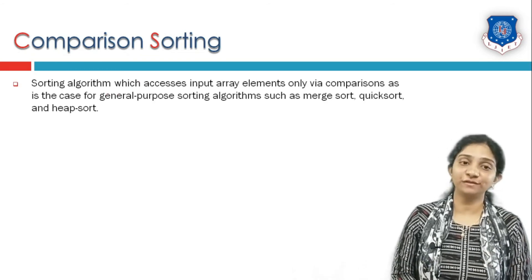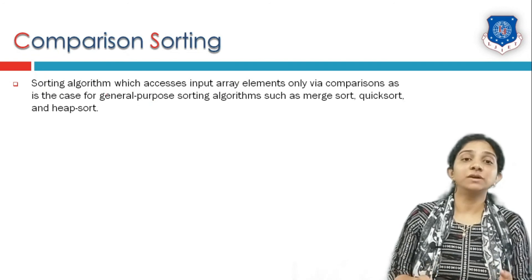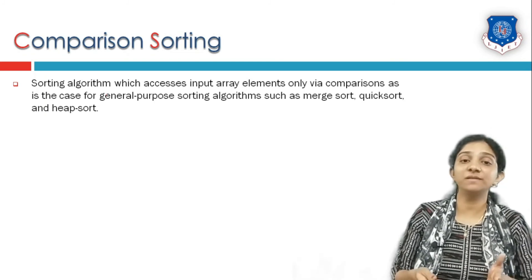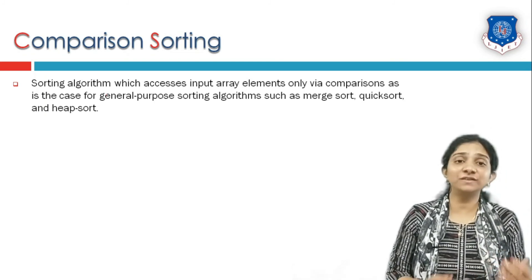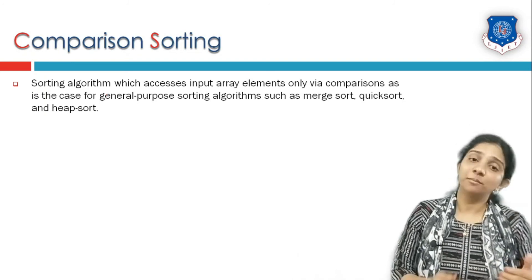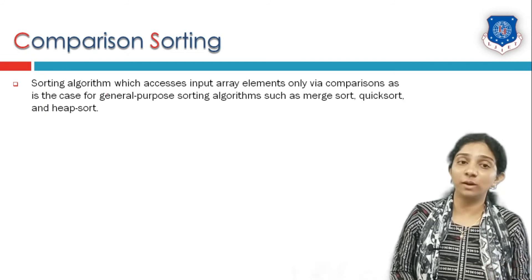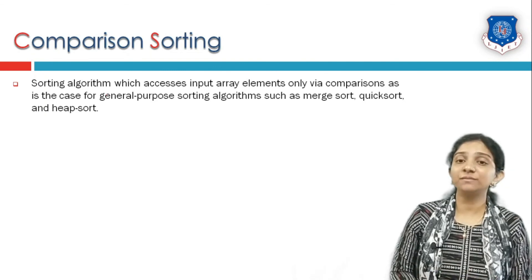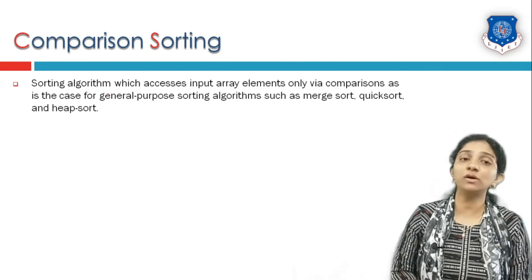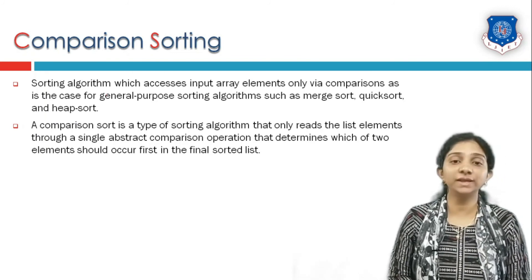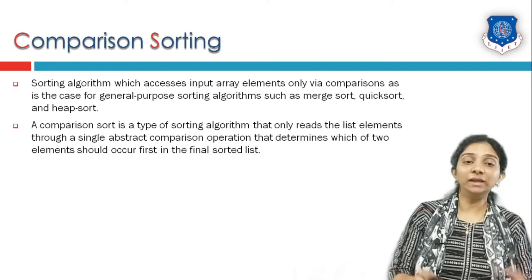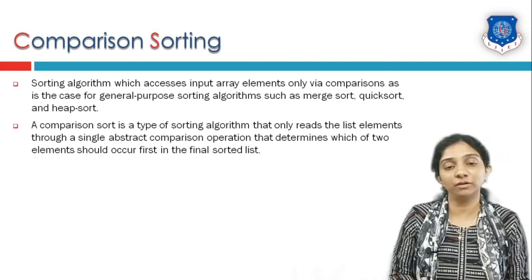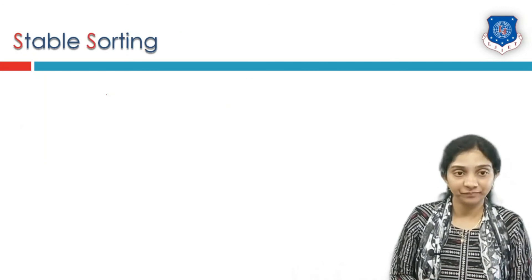The second definition is comparison sort. A sorting algorithm that compares any two elements of a given list is called a comparison-based sorting algorithm. There also exist sorting algorithms that do not compare elements but still sort the input — these are called non-comparison-based sorting algorithms. Merge sort, quick sort, bubble sort, and shell sort are all comparison-based sorting algorithms that read the input list by comparing elements and produce a final sorted list as output.